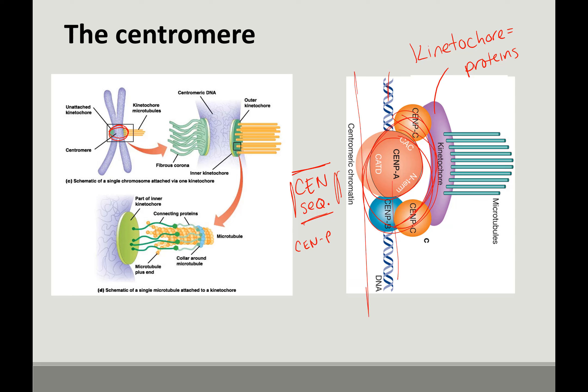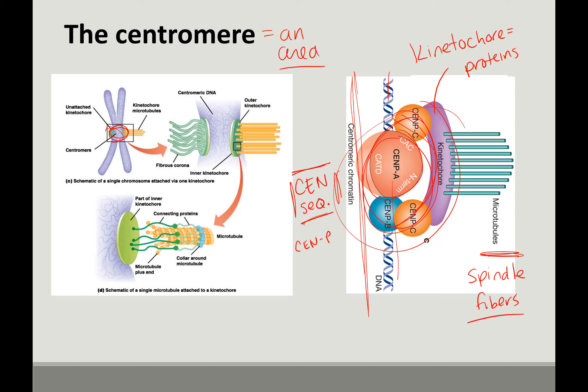There is a kinetochore complex on one chromosome and a complex on the other sister chromatid. The centromere is really an area — not a specific protein — made up of many proteins. What's important is that the microtubules, which we also call spindle fibers, are attached to the centromere through the kinetochore proteins. This is what allows chromosomes to eventually be split in half and put into two new daughter cells.